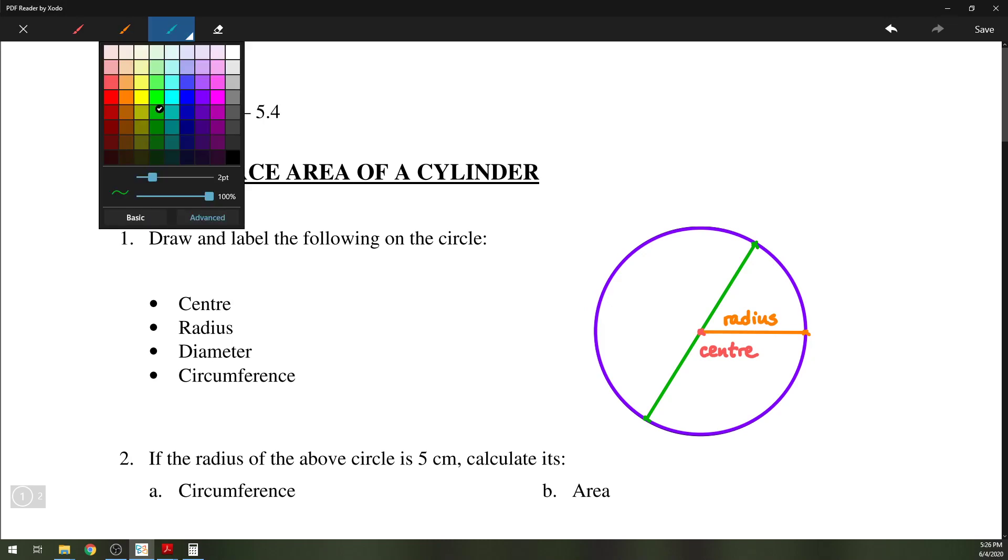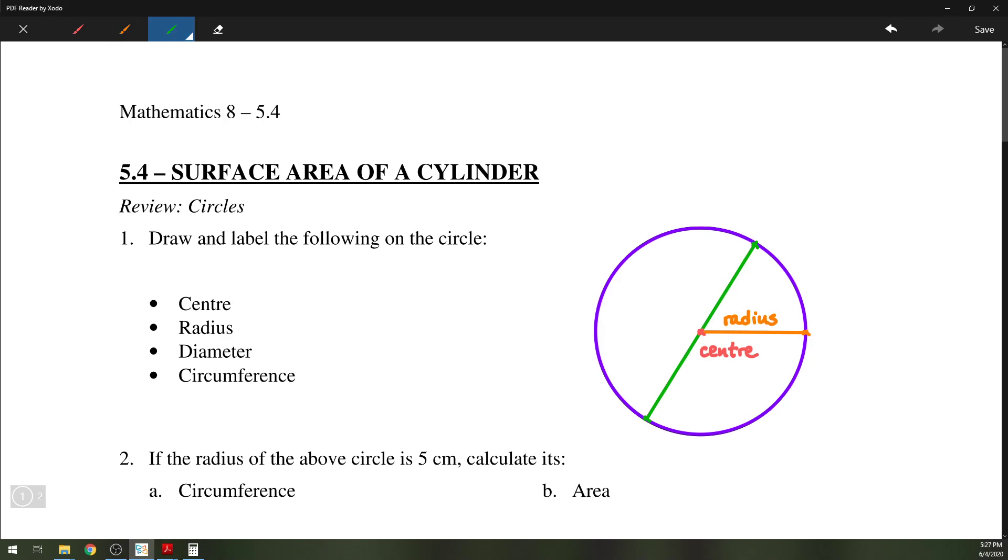And then we have the diameter, which is a line segment connected to the edge of the circle, one edge to another that goes through the center of the circle, so this is here a diameter.